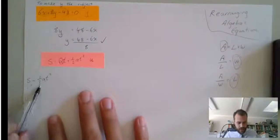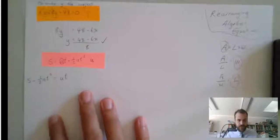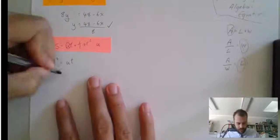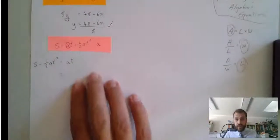So, that's s minus 1 half at squared equals u t. From there, that's u times t. So, I can divide by t.